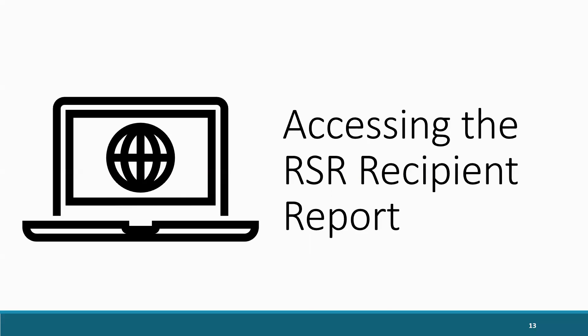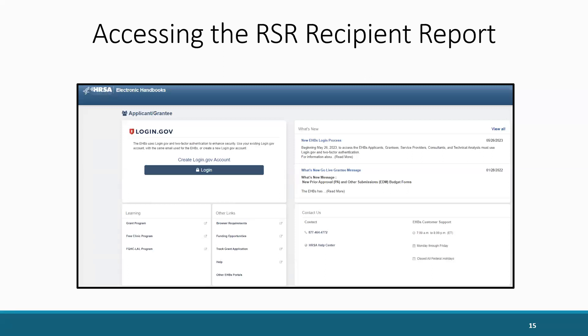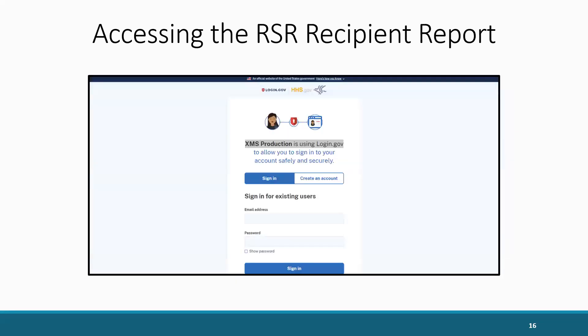Now that we know who should be completing an RSR recipient report, we can move on to how you access it. The first step is to access the correct login portal on the HRSA Electronic Handbooks, or EHBs. Recipients will use the applicant grantee login link on the grants.hrsa.gov website. On the following page, you'll be directed to login.gov — this is a change for this year's EHBs login process. Go ahead and click the login button, enter your login.gov credentials, and select Sign In. You will also be prompted to put in your two-factor authentication, which will then take you to the EHBs homepage.